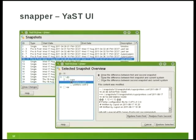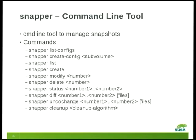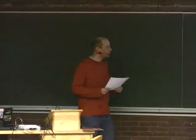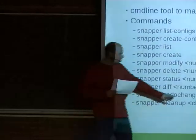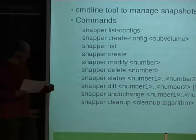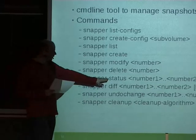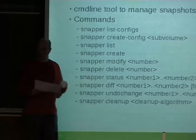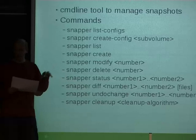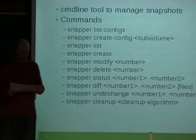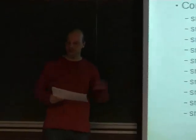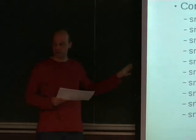Question about the undo-change command: the two numbers are the same as for status — you compare two snapshots and get the file list, and undo-change takes the same parameters. The restore is always done in the current system, called snapshot zero in the UI and command line tool. We always write to the current system, and the snapshots we create are read-only. There was also a question about race conditions — if something changes in between while we do our undo-change, that is of course a potential issue.